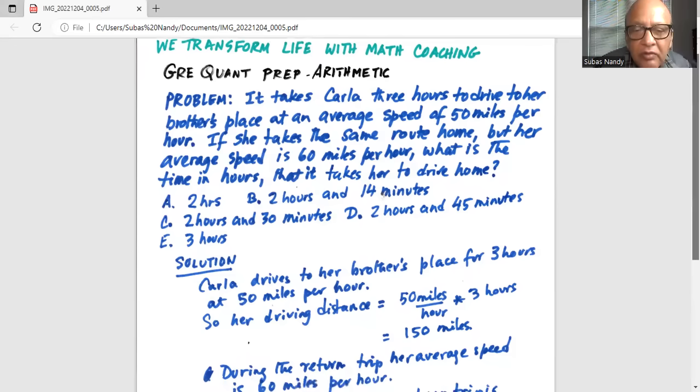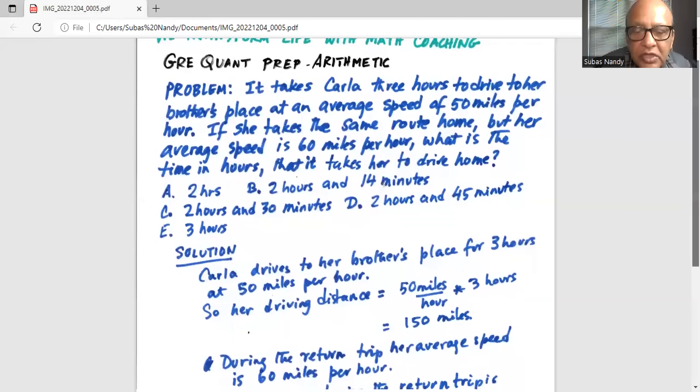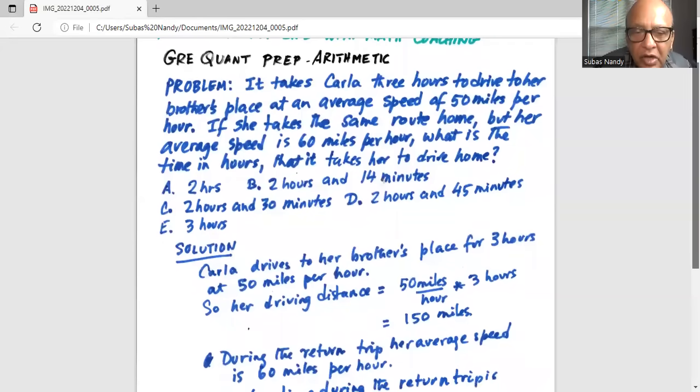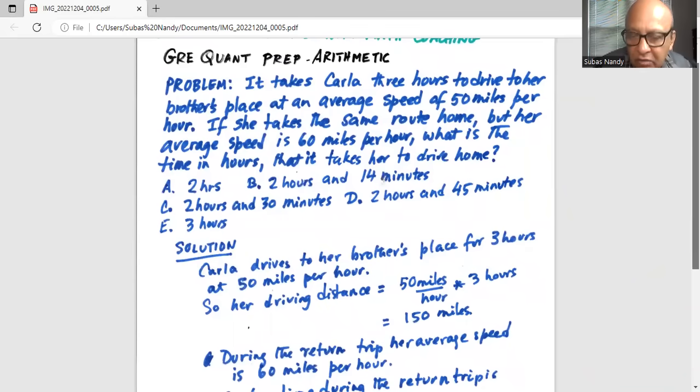Okay, so solution. Carla drives to her brother's place for three hours at 50 miles per hour. So our driving distance is 50 miles per hour multiplied by three hours. Hours and hours cancel, hours in the numerator cancel with hours in the denominator to get 150 miles.